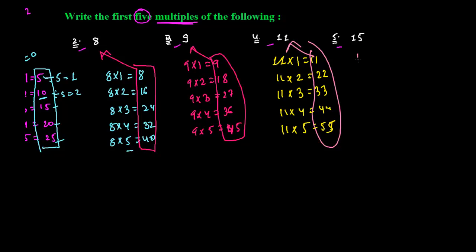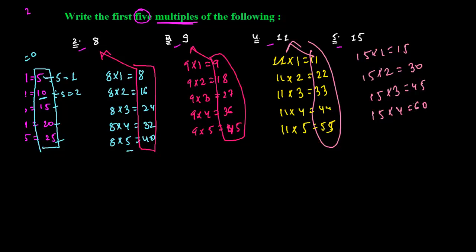Now for 15: 15×1=15, so 15 is the first multiple of 15. 15×2=30, so 30 is the second multiple of 15. 15×3=45, 15×4=60, and 15×5=75, so 75 is the fifth multiple of 15. These numbers are the first five multiples of 15.